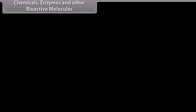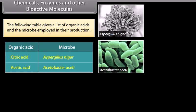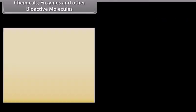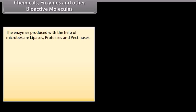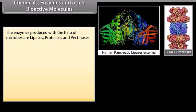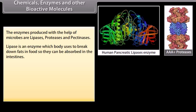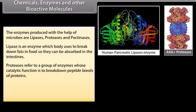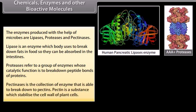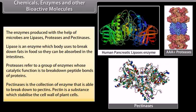Chemicals, enzymes, and other bioactive molecules. The following table gives a list of organic acids and the microbe employed in their production. The enzymes produced with the help of microbes are lipases, proteases, and pectinases. Lipase is an enzyme which the body uses to break down fat in food so it can be absorbed in the intestines. Proteases are a group of enzymes whose catalytic function is to break down peptide bonds of proteins. Pectinases are a collection of enzymes able to break down pectins, the substance which stabilizes the cell wall of plant cells.